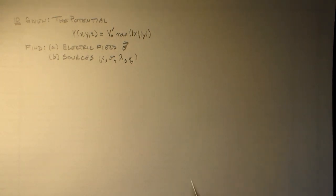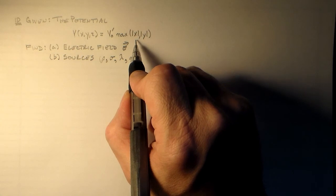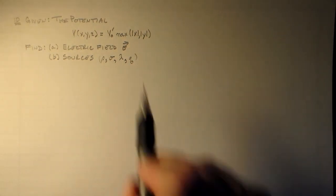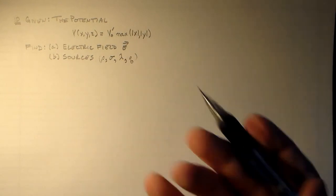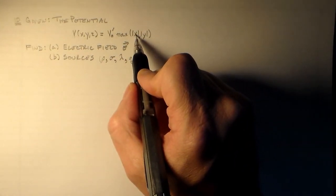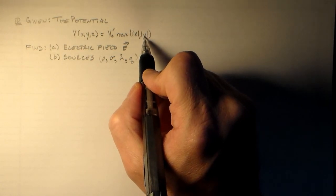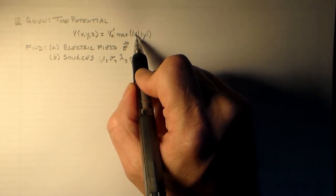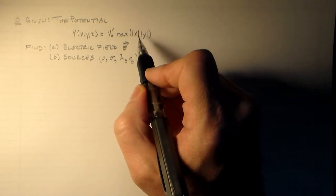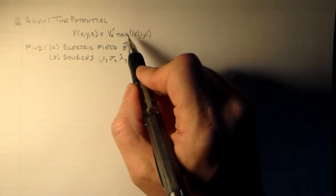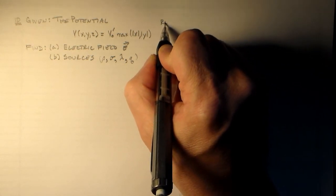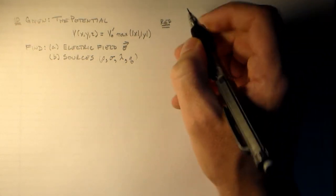You're saying, well, I don't know what the maximum of x and y is. You know what the maximum of x and y is: if x is 3 meters and y is 2 meters, then 3 is greater than 2, so we've got 3 meters in this max function, and that's what comes out. That's a fairly simple function to work with.